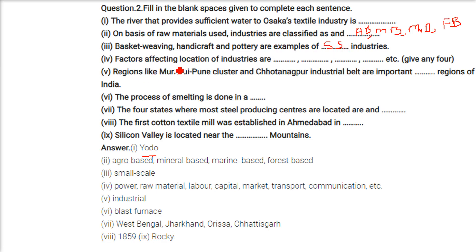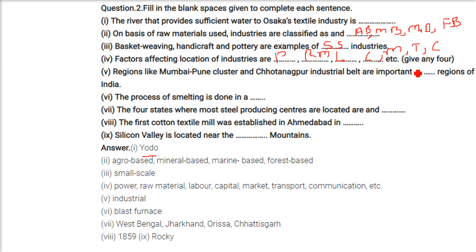Basket weaving, handicraft, and pottery are examples of small-scale industry. Factors affecting location of industries are power, raw material, labour, capital, market, transport, communication, etc. Regions like Mumbai-Pune cluster and Chota Nagpur industrial belt are important industrial regions.